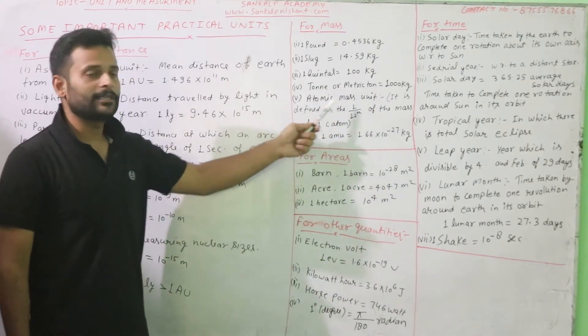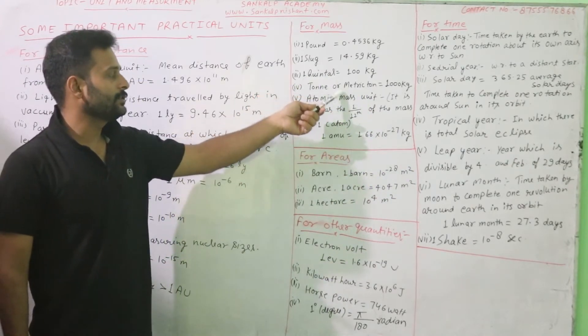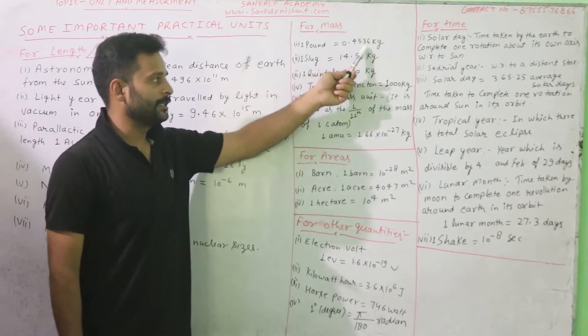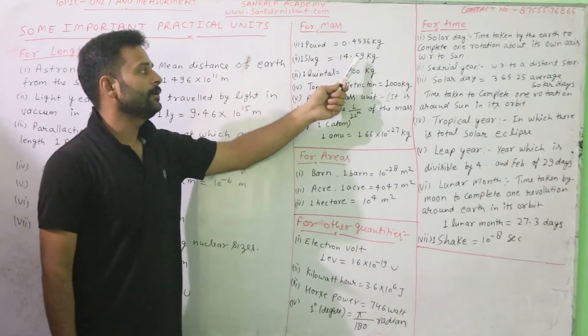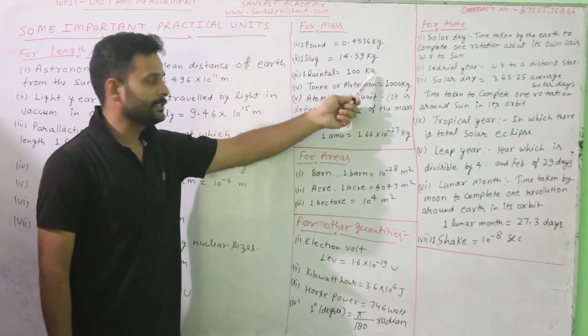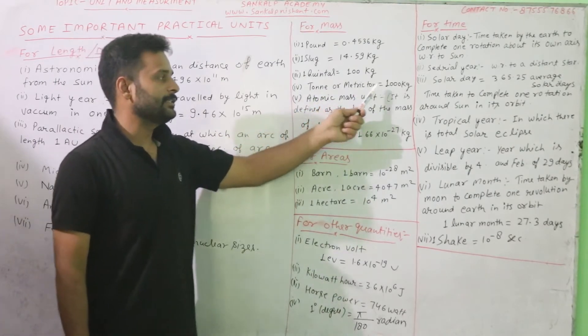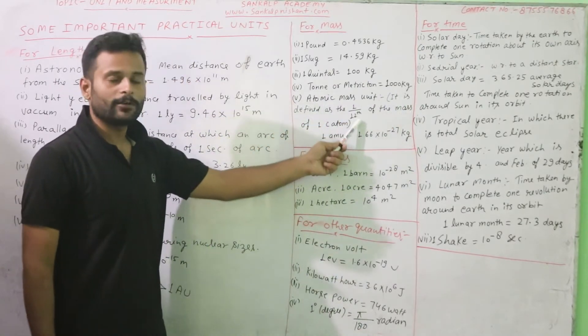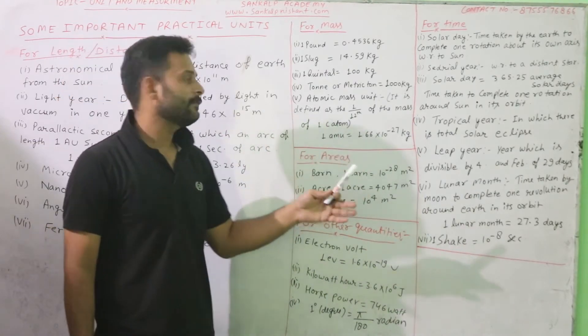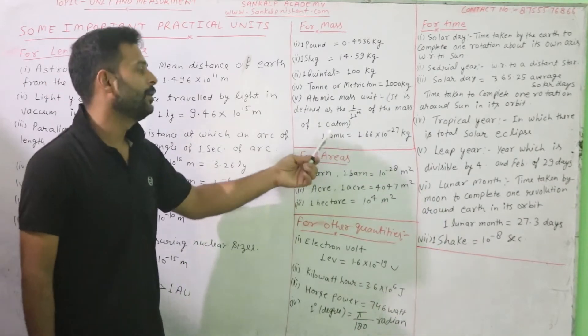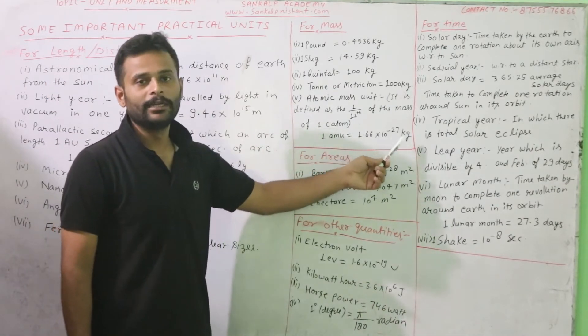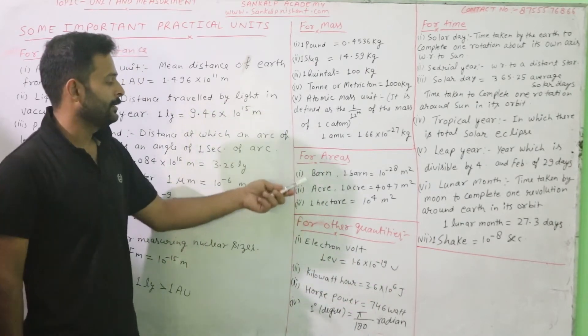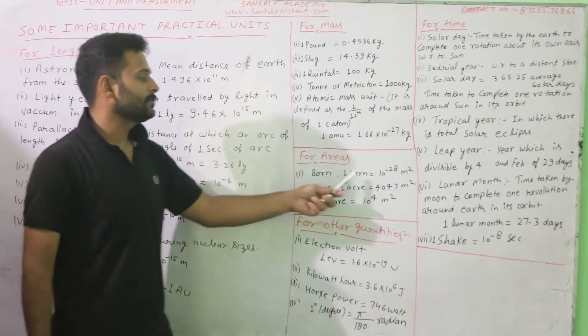Then we have mass units. If we have pound, it is equal to 0.4536 kg. 1 stone equals to 14.59 kg. 1 quintal equals to 100 kg. And last is atomic mass unit, which is 1 by 12th of mass of the carbon atom. That is 1.66 into 10 to the minus 27 kg.